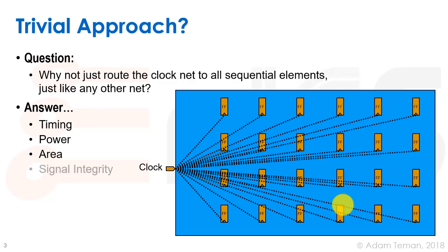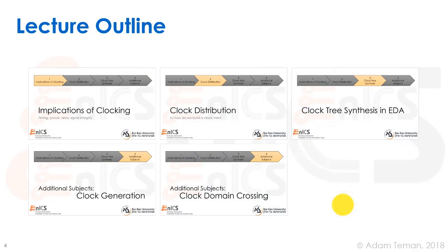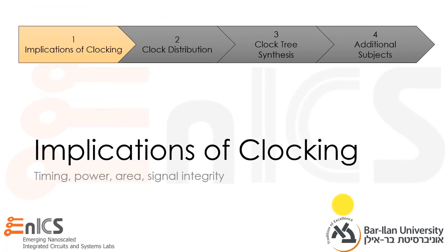The answer is multi-dimensional and has implications on timing, power, area, signal integrity, and other things. We'll go into those in the next slides, discussing the implications of clocking on timing, power, area, and signal integrity.